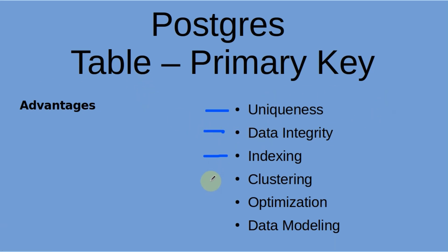Now let's talk about clustering. In Postgres, the primary key columns can be used as a clustering key when defining a clustered index. Clustering arranges the physical storage of table data in the same order as the index, which can improve query performance, especially when accessing multiple rows in a sequential manner.